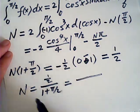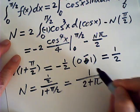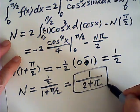So this one equals times 2, divided by 2 plus pi. That is my N.